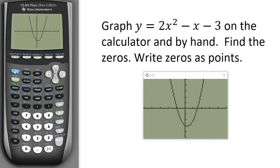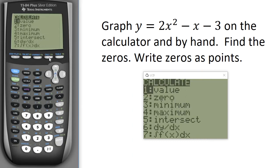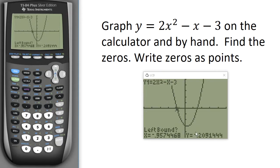So I want to find these zeros. I'm going to hit 2nd, Calc, and I'll choose number 2, zero. And what this does, notice at the top here, it's showing me my function, f(x) = 2x² - x - 3, or y = 2x² - x - 3.